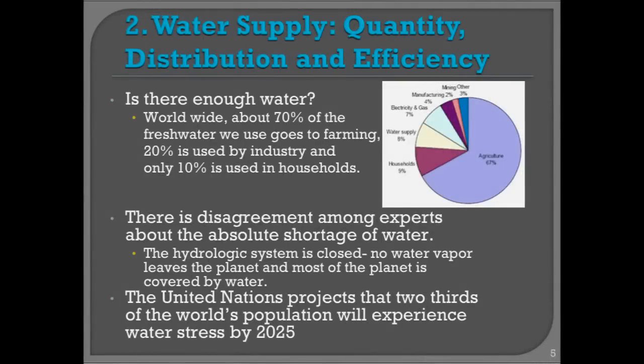Let's talk about the issue of water supply, quantity, distribution, and efficiency. First, is there enough water? At least 70%, if not a little bit more, of all the fresh water in the world goes to farming. About 20% is used by industry, and only 10% gets to the households. If you go to a place like California, most of the water that comes from the Colorado goes to the farms, not to the cities. And in fact, an emerging discussion is just that very issue.